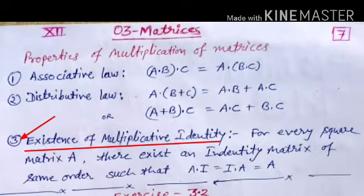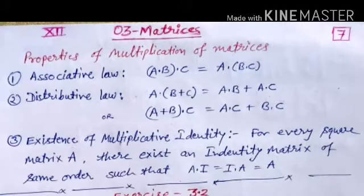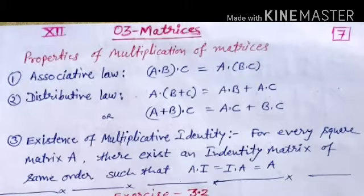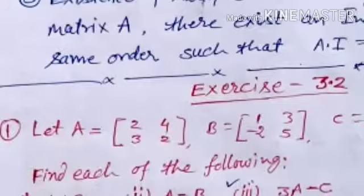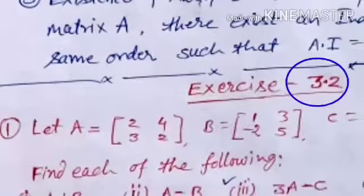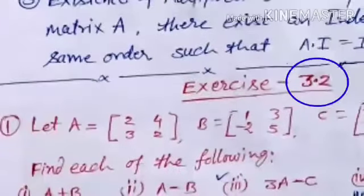Third is the existence of multiplicative identity. For every square matrix A, there exists an identity matrix of the same order such that A into I equals I into A, and both are equal to A. Here, I is known as the identity matrix. Now, we will start exercise 3.2.